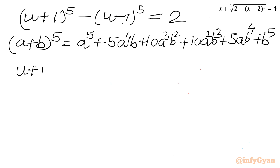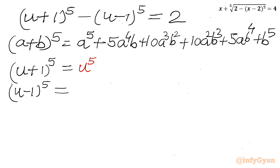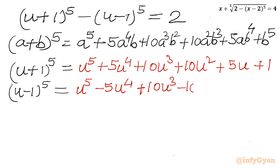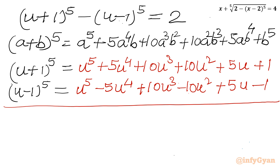Now I expand (u plus 1) whole power 5 and (u minus 1) whole power 5, then subtract the second from the first. With a equals u and b equals 1, the expansion of (u plus 1)⁵ gives: u⁵ plus 5u⁴ plus 10u³ plus 10u² plus 5u plus 1. Similarly, (u minus 1)⁵ gives: u⁵ minus 5u⁴ plus 10u³ minus 10u² plus 5u minus 1. Now we subtract the second expression from the first.